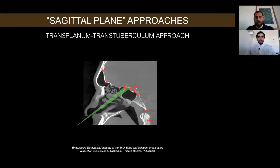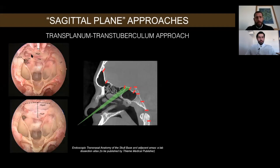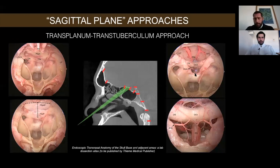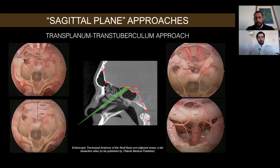The next approach is the transplanum-transtuberculum approach. With this approach, we access the sphenoid sinus bilaterally. This is the tuberculum sellae and the planum sphenoidale. Our opening exposes the dura after bone removal. You can see our window with the optic chiasm, the two optic nerves, and a magnification of the optic chiasm with the pituitary stalk. These are the branches of the anterior hypophyseal arteries — very important branches to be preserved in such an approach.